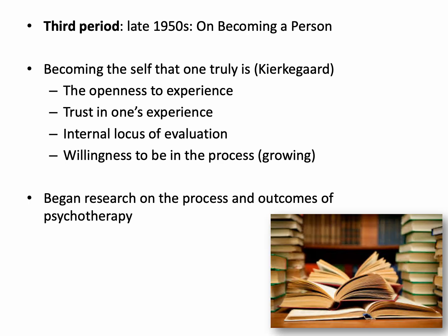The third period was in the late 1950s, and he wrote On Becoming a Person — about becoming the self that one truly is, similar to what Kierkegaard said in existential therapy. It focuses on openness to experience, trust in your own experiences, and internal locus of evaluation — making judgments from inside yourself rather than basing them on other people's opinions or values. Also, willingness to be in the process, which is growing — understanding there's a developmental process to all of this, going through experiences to become who you'll be, that actualizing tendency we discussed.